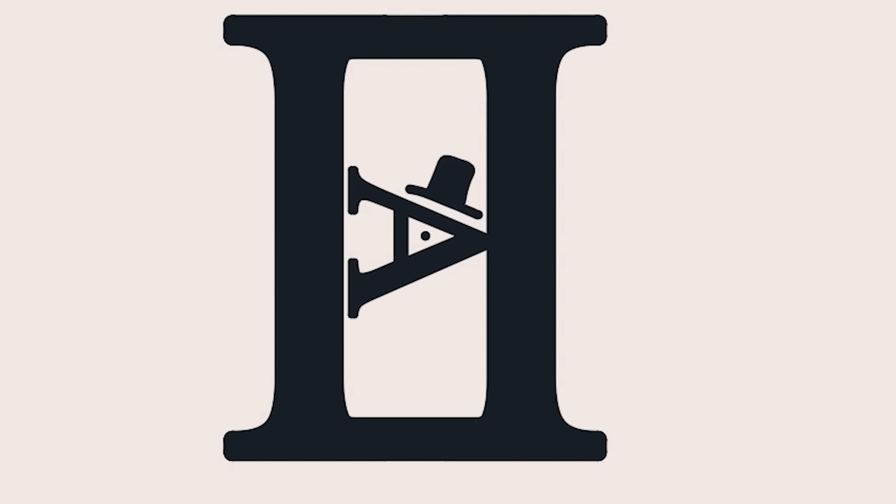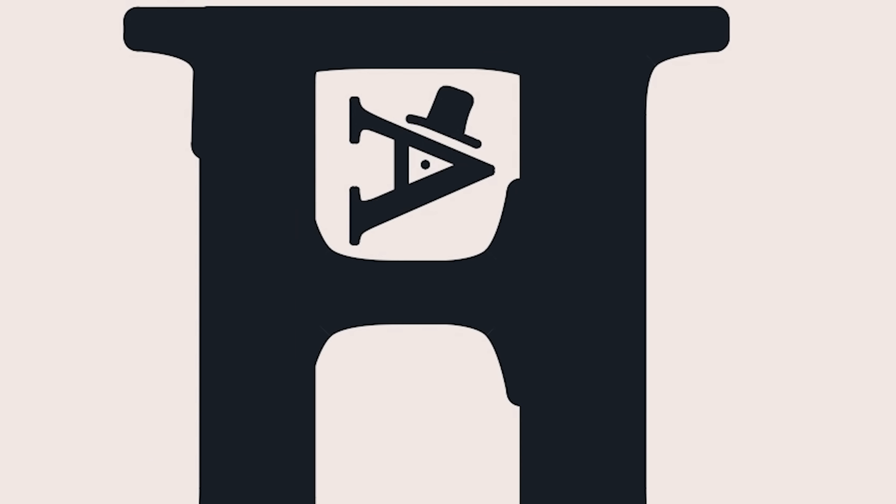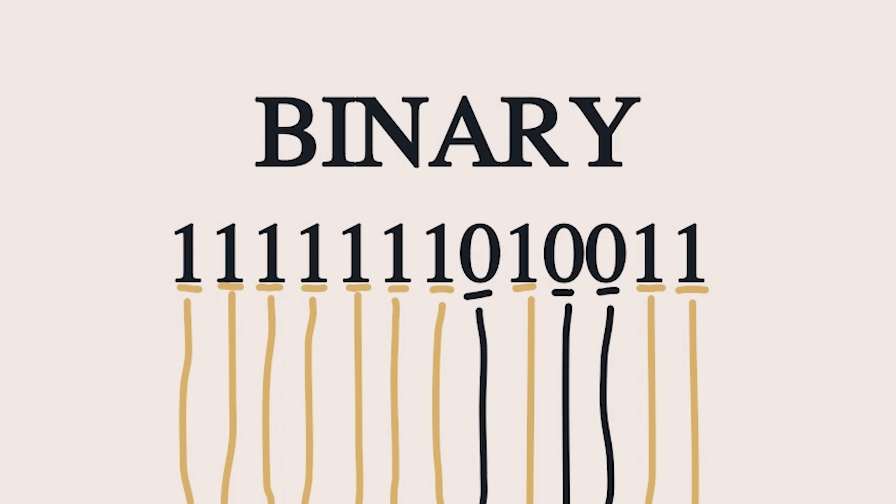We can easily find other number systems, though. Let's have a look at the computer, phone, tablet, laptop, or whatever you're watching us on right now. That counts in binary, which is base 2. 42, for example, in binary is 101010, which may seem a little bit random, but it does make sense when you think about it.